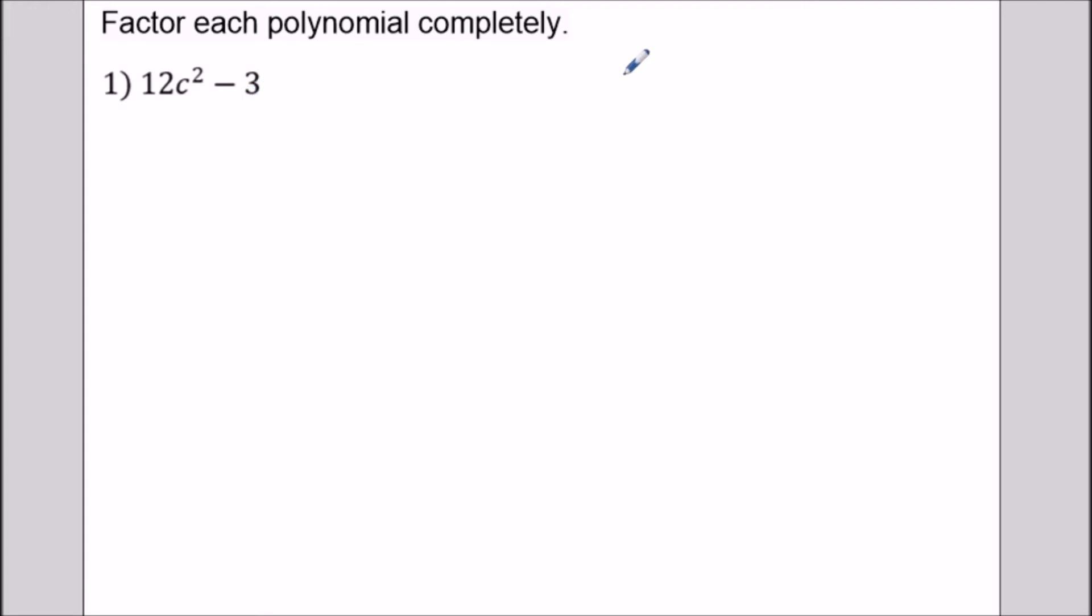Now the main method we're going to be using here is difference of two squares. So anytime we have a difference of a² - b² we could factor this to (a + b)(a - b). But in this situation here since we're factoring completely it's a good idea to factor out the greatest common factor first.